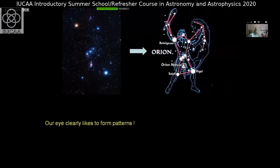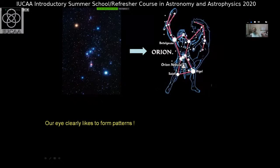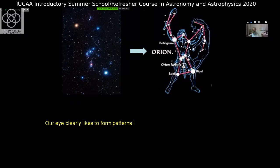But immediately people said maybe this is a selection effect, because our eye clearly likes to form patterns. You go out and see Orion — it takes a lot of imagination to make Orion look like a hunter. But that's what the ancients did: they found beautiful patterns — a hunter, a bear, a lion. Our eye likes to form patterns because for hundreds of thousands of years we lived in jungles with tigers. If you couldn't spot a tiger accurately, it came and ate you. So only those who were very adept at looking at patterns survived — a selection effect.